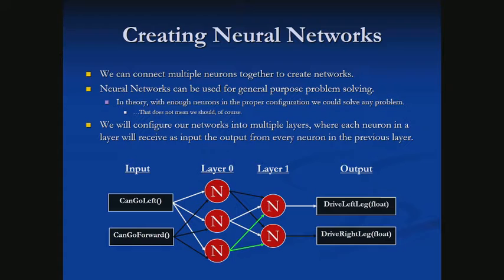The rule of thumb, though, generally is less is more. We can theoretically solve most problems in just one layer with very few neurons. When we get into topics like deep learning, what that really means is that we have multiple layers of neurons.